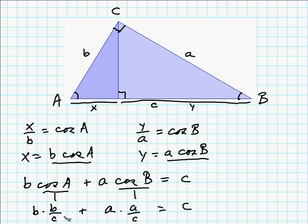So we have B times B over C plus A times A over C equals C. Multiply through by C. The C cancels here. C cancels here. I have C squared over there. But that's just B squared, and that's just A squared. So A squared plus B squared equals C squared.